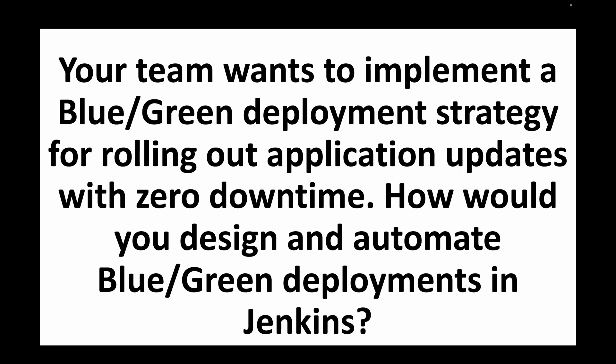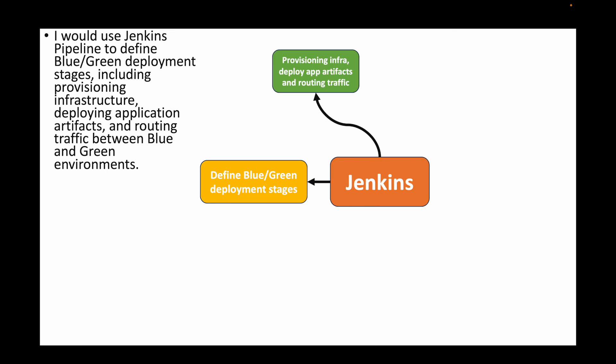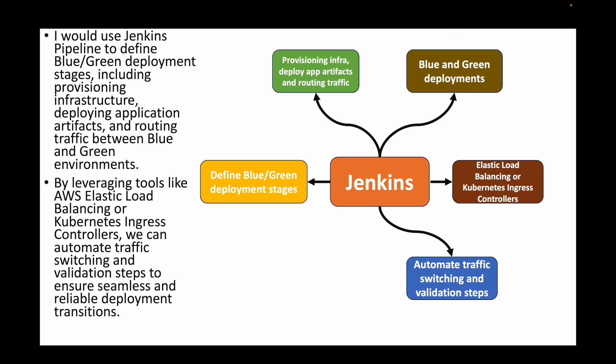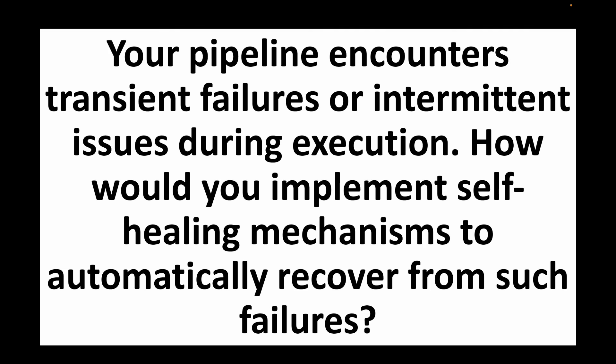The next question: your team wants to implement a blue-green deployment strategy for rolling out application updates with zero downtime — how would you design and automate blue-green deployment in Jenkins? Use the Jenkins pipeline to define blue-green deployment stages including provisioning infrastructure, deploying application artifacts, and routing traffic between blue and green environments. Leverage tools like AWS load balancers or Kubernetes ingress controllers to automate traffic switching and validate deployment transitions for seamless reliability.